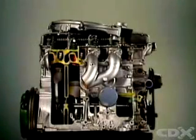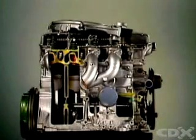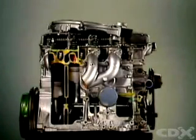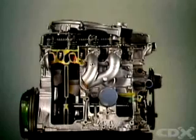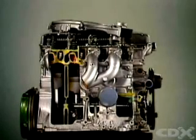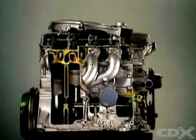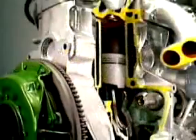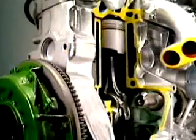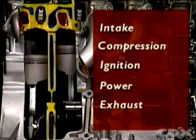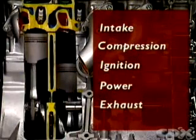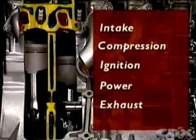What is a stroke? It's the movement of the piston from top dead center to bottom dead center. Calling an engine four-stroke means its engine cycle has four strokes. A four-stroke gasoline engine uses internal combustion, so those four strokes must include the five key events common to all internal combustion engines.